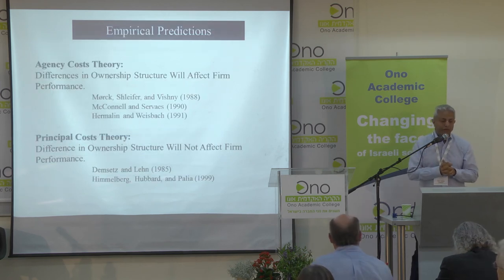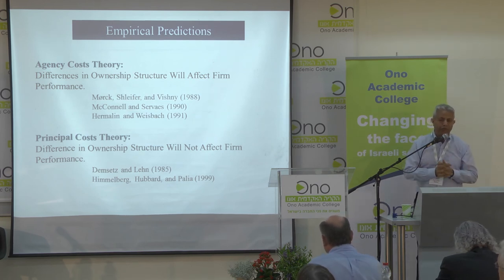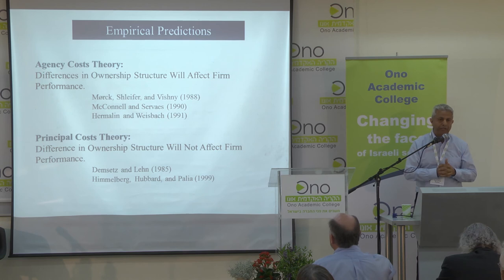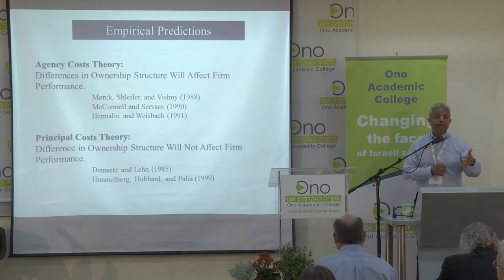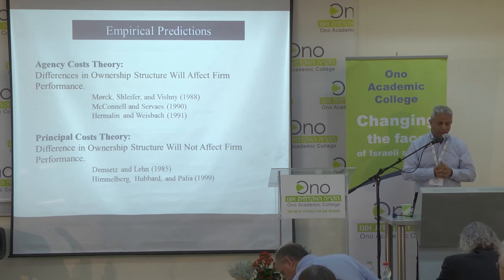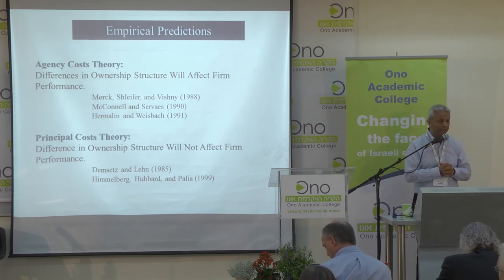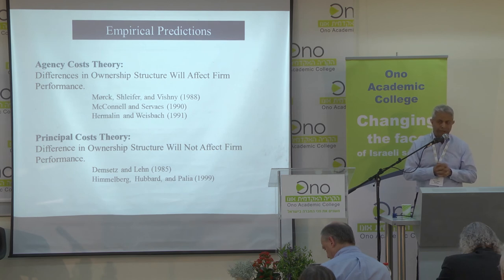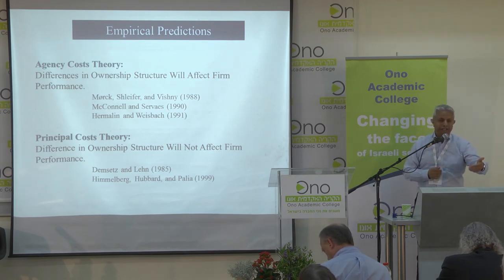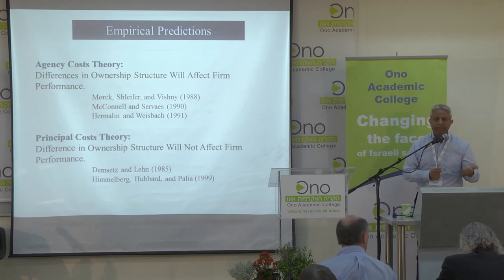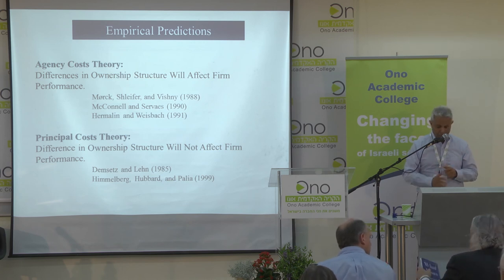Empirical prediction: agency cost theory predicts that if you change ownership structure, it will affect firm performance. If you increase the wedge between cash flow rights and control rights, you should see differences in firm performance. Indeed, some empirical studies like Morck, Shleifer, and others have shown differences in performance when you change ownership structure. Principal cost theory predicts you shouldn't see such a difference — they should be the same. A famous study by Dempsey and Lehn supports that conclusion. There is also a study by Himmelberg, Hubbard, and Paglia that corrected earlier studies for missing controls, and the effects they had discovered all disappeared, as principal cost theory would suggest.